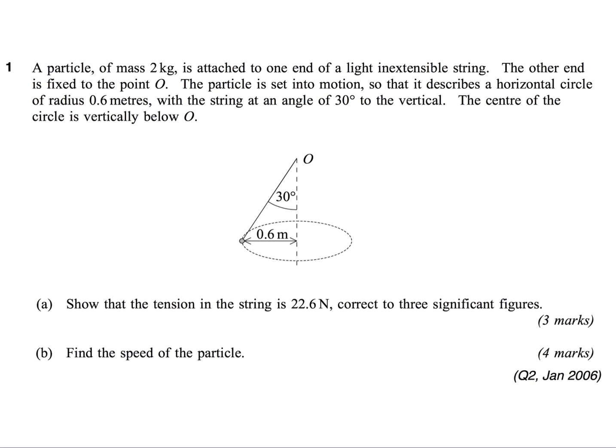A particle of mass 2 kg is attached to one end of a light, inextensible string. The other end is fixed to the point O. The particle is set into motion so that it describes a horizontal circle of radius 0.6 metres, with the string at an angle of 30 degrees to the vertical. The centre of the circle is vertically below O.